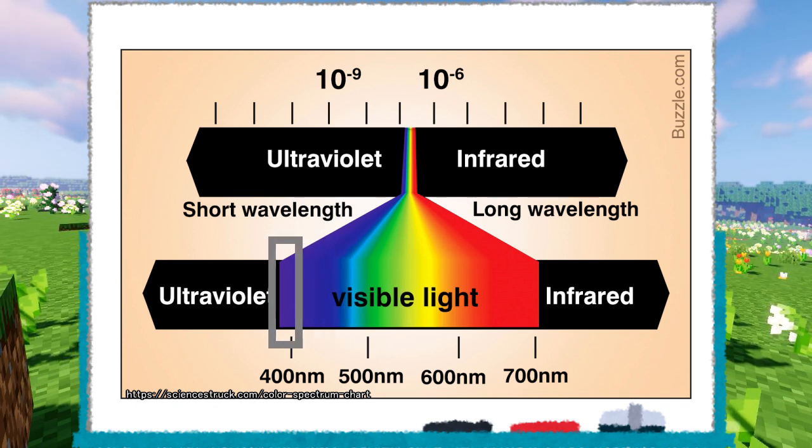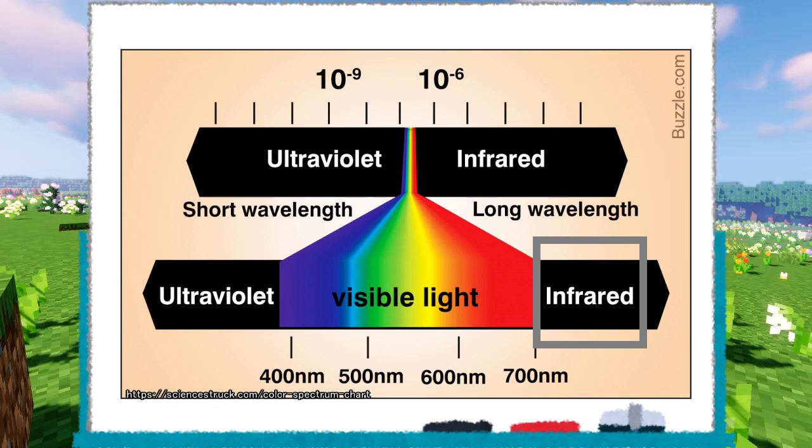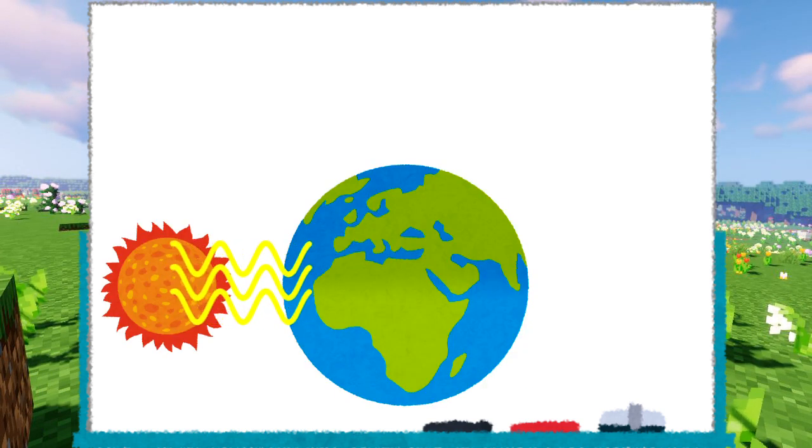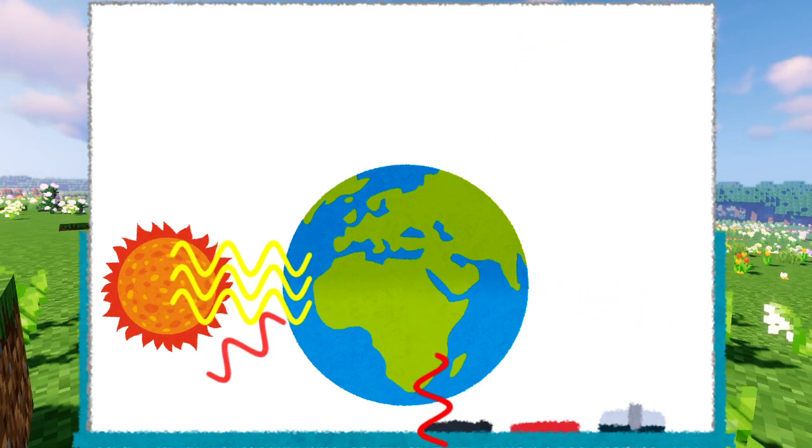But matter colder than 525 degrees Celsius emits invisible light called infrared radiation. Earth does not become too hot from sunlight because it releases heat to space as invisible light called infrared radiation.